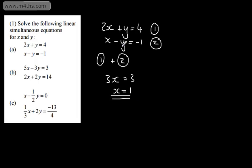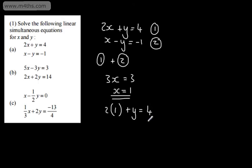We now need to substitute x back in. I'm going to choose equation 1: two lots of x, which is two lots of 1, plus y is equal to 4. So substituting in, we've got 2 plus y is equal to 4, so y is equal to 2. We've solved those simultaneous equations: x is equal to 1 and y is equal to 2.